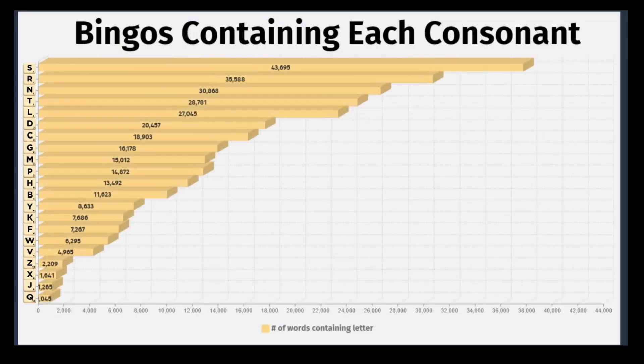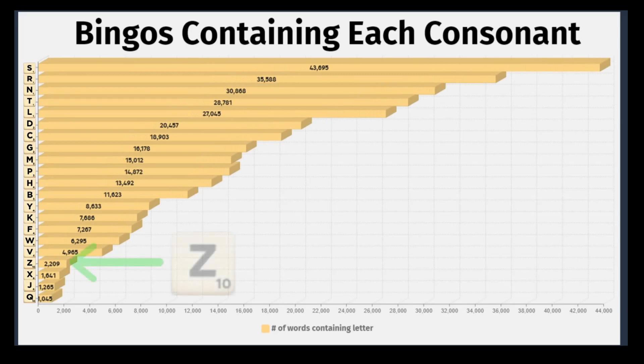But overall, the Z lags well behind the rest of the consonants as a bingo tile. This chart shows how many bingo length words contain at least one of each consonant. You can see that the Z is way down towards the bottom. That means very few seven and eight letter words contain the Z.